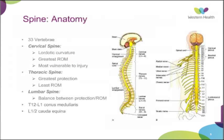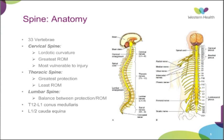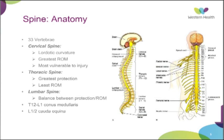Looking at spinal anatomy, there are 33 vertebrae within the spinal column, broken up into cervical, thoracic, lumbar, sacral, and coccyx. The cervical spine has a lordotic curvature and the greatest range of motion, so this is where you get the highest incidence of spinal injuries. The thoracic spine has the greatest protection because the ribs articulate with the vertebrae and attach to the sternum. Importantly, at the T12-L1 level is the conus medullaris, and just inferior to that, the cauda equina begins — important in lumbar fractures and determining neurological deficit.